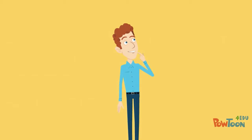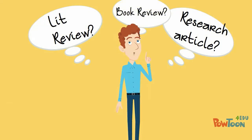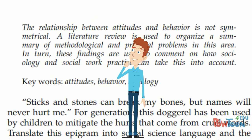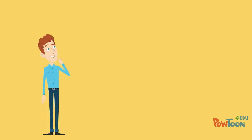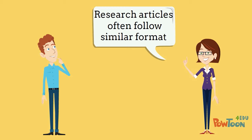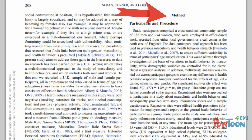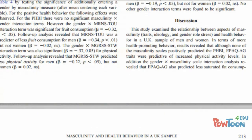At first, Luke had difficulty determining the type of article he had found. However, he learned to carefully read the abstract for the article, as it often described what type of article he had found. He also realized that research articles often have a specific format, with clearly labeled sections, such as a method section, a result section, and a discussion section.